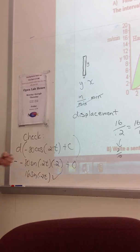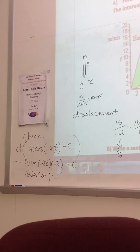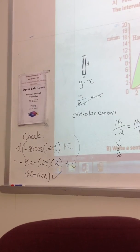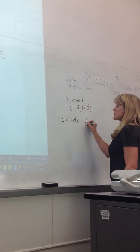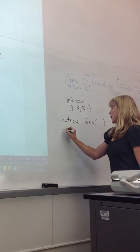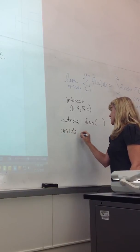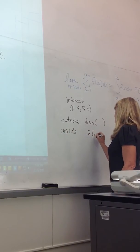If I did that same problem using u-substitution, my outside function is 16 times sine, my inside function is 0.2T.